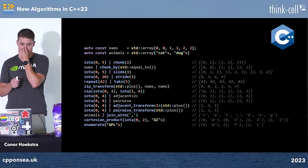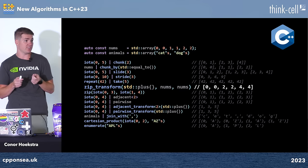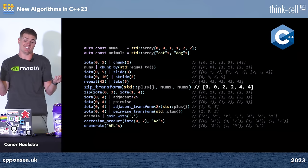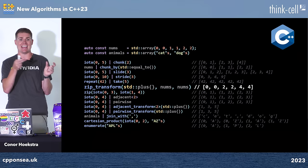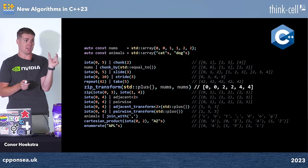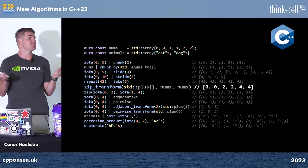'zip_transform' — called 'zip_with' in range-v3 and Haskell — takes a variadic number of sequences and combines them with an N-ary operation. Here we do a binary zip_transform with plus over the same sequence {0,0,1,1,2,2}, effectively doubling the values to give {0,0,2,2,4,4}. You need an operation with arity matching the number of sequences you pass.